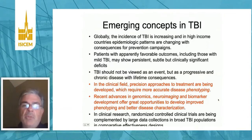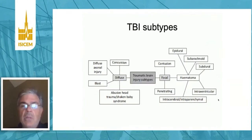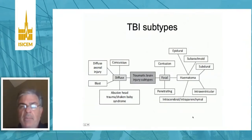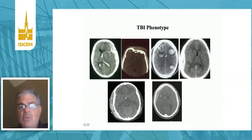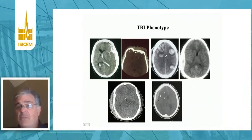Neuroimaging gives us great opportunities to improve disease characterization. There are many subtypes of traumatic brain injury: concussion, blast injury, diffuse axonal injury, and then the various hemorrhages that can be seen. CT allows us to phenotype the patient. Here is a subdural hematoma, intraventricular hemorrhage, depressed skull fracture, multiple contusions, an epidural, cerebral swelling, and a subdural.